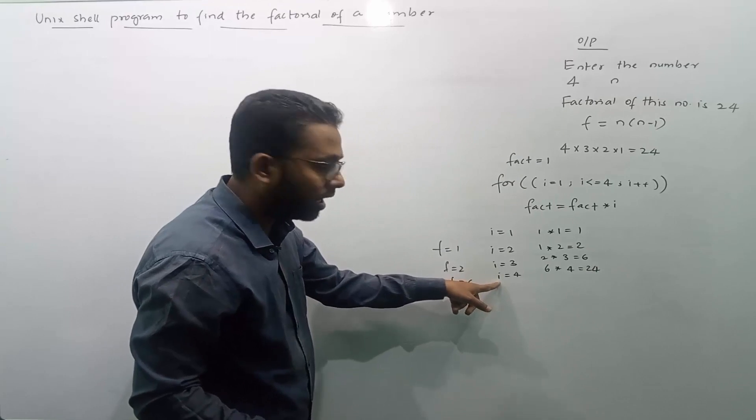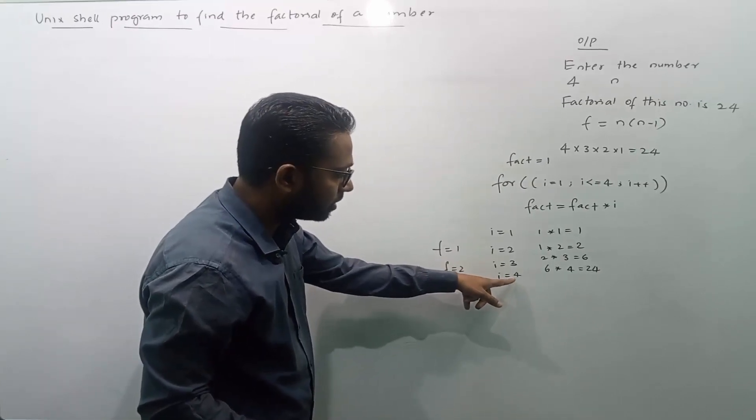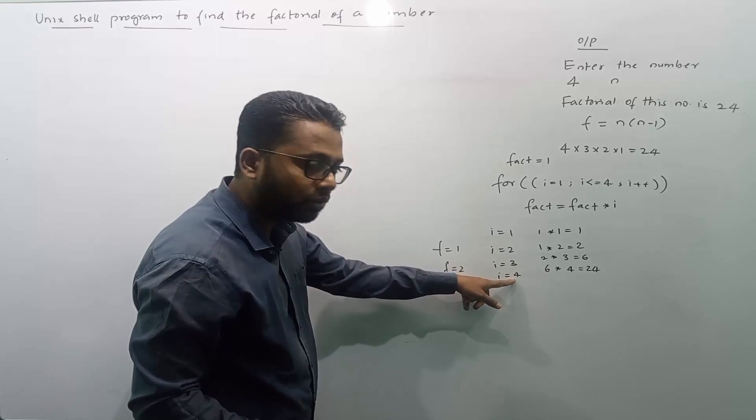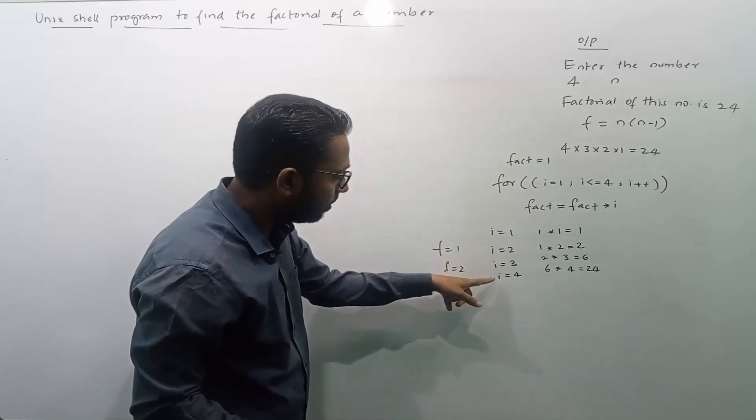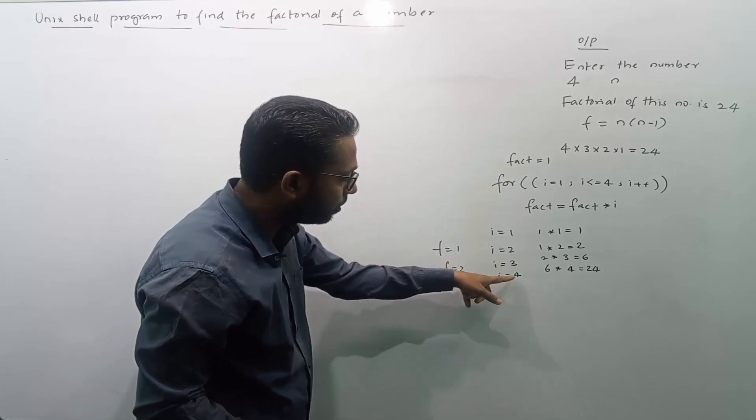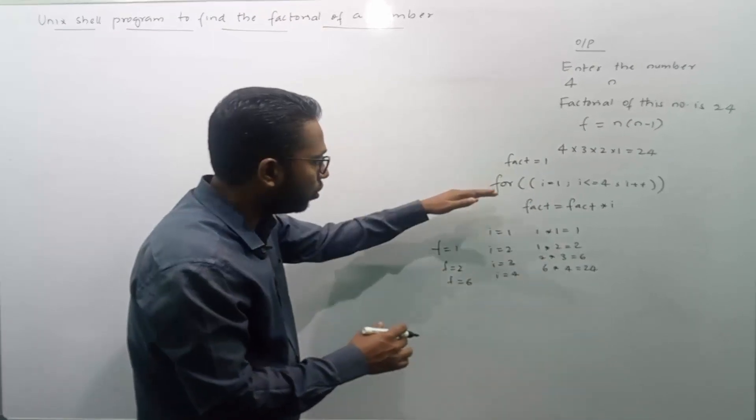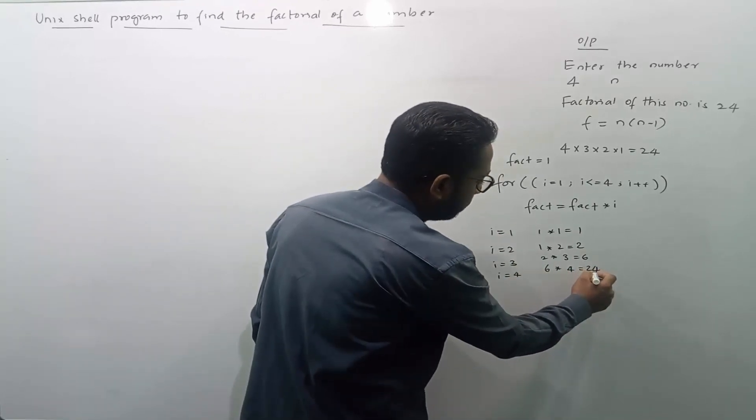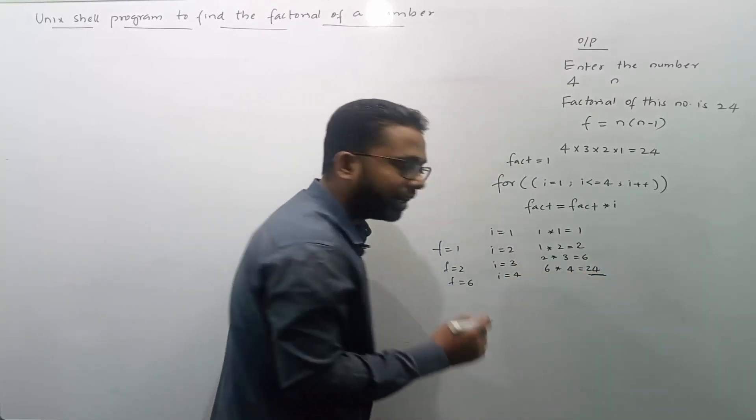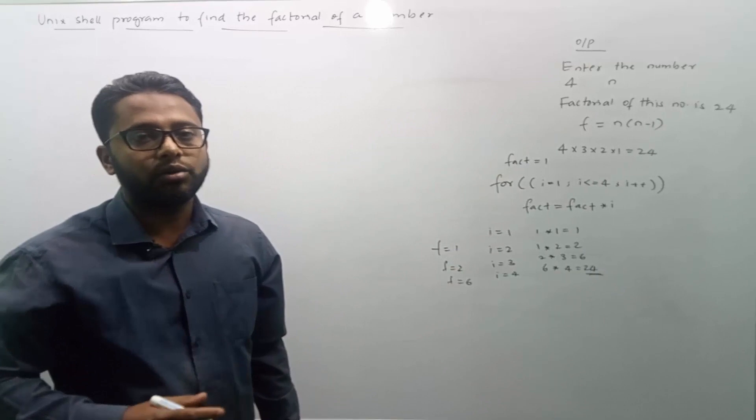Now this is my last limit. Until the value of i becomes less than or equals to 4, I need to keep on doing this task. So now when the moment when i becomes 4, i should stop. For loop gets terminated and I will get the value 24 and this is my final output and I just need to print that output.